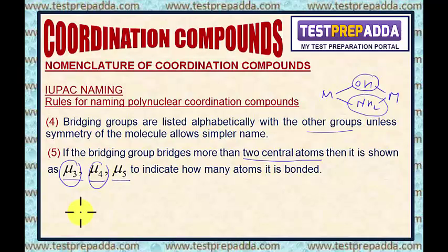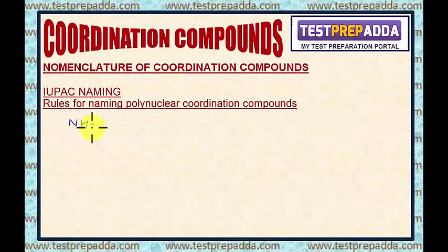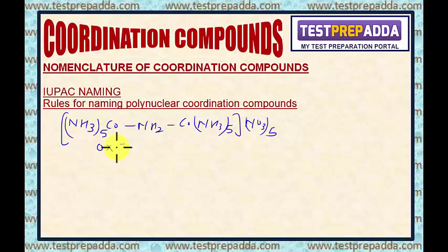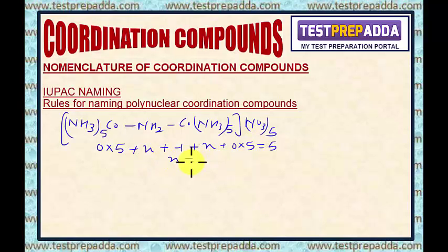I will take a few examples to understand these rules. Consider this polynuclear coordination compound. First of all, find the oxidation number of the central atoms. Here, NH3 charge is 0, so 0×5 plus x, and NH2 charge is minus 1, plus x plus 0×5 equals 5. So 2x equals 6, and x comes as 3.